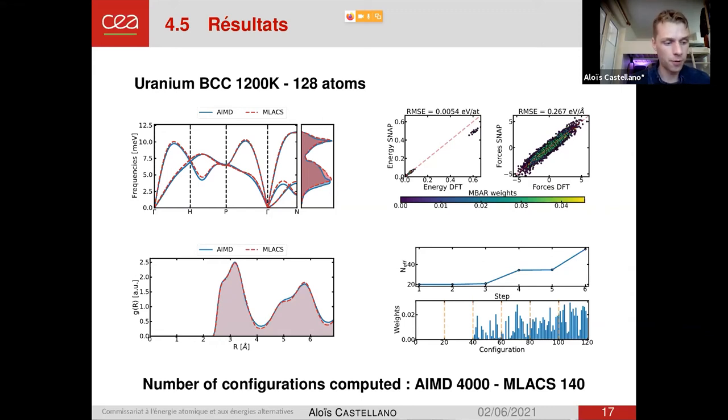I won't talk about this here because of the time, but in the end, for this simulation, the AIMD, the ab initio molecular dynamics, needed 4,000 configurations to compute the averages, while with this new method, we needed only 140 configurations and we did 20 configurations in parallel at each time. In the end, in human time, the molecular dynamics needed two months to compute, while I needed only to wait two days to have the results with the machine learning assisted canonical sampling method.